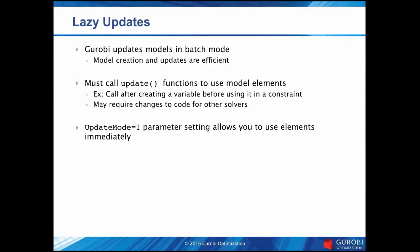Lazy updates is also an important concept. When you make calls to Gurobi, it queues up all changes over multiple API calls and applies them in batches, making model creation and updates more efficient. After you include model elements, you must call GRBupdatemodel before you can use them — for example, after creating a variable but before using that variable in a constraint. This may require some changes to existing code, but they're typically minimal since most users create models in phases, such as adding all variables up front and then all constraints — in that case, you'd only need to call update once. Gurobi recently introduced the UpdateMode parameter, which allows you to use elements immediately without making additional calls.